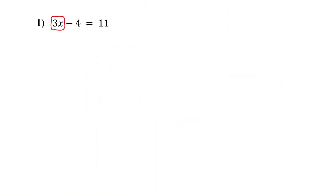First, we isolate 3x — that is the variable term in this example. Notice that 4 is being subtracted from 3x. So to isolate 3x, we do the opposite of subtraction: we add 4, and we add to both sides to keep the equation balanced. Whatever operation you do to one side, you must also do to the other side. Now on the left side, negative 4 plus 4 is 0 — they cancel each other out, leaving 3x alone. On the right, 11 plus 4 is 15. Now the variable term is isolated — that is step 1.